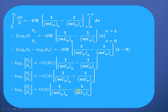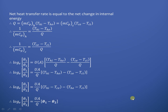The net heat transfer rate Q equals mCp·ΔT for both fluids: Q = mCp_h·(T_hi - T_he) = mCp_c·(T_ce - T_ci). From these we get 1/mCp_h = (T_hi - T_he)/Q and 1/mCp_c = (T_ce - T_ci)/Q. Substituting into the previous equation: log(theta_1/theta_2) = U·A/Q·[(T_hi - T_he) - (T_ce - T_ci)], and taking 1/Q common gives U·A/Q.